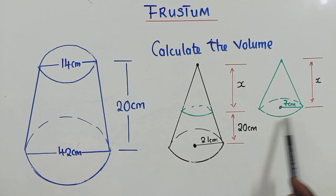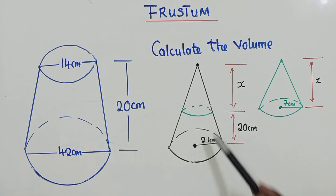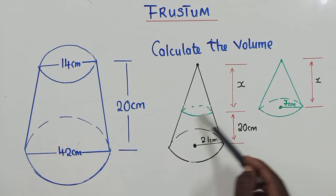In other words, when you have a frustum, try to think you have a full cone like this. It's the finished cone. And also identify the part that has been cut, which is right here. This is where it has been cut.